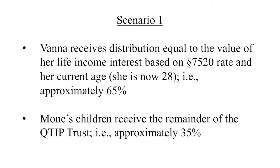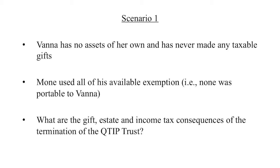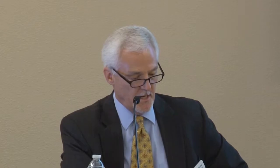The marital trust is split based on actuarial factors. In 2014, Vanna is 28 years old, so her share of the 45 million dollar marital trust would be approximately 65 percent — about 29 million dollars — and the Smith children would receive about 35 percent when the trust is severed. Vanna has no prior taxable gifts and has her full applicable exclusion amount. Money unfortunately used all of his exemption before death, and none of his estate tax exemption was portable to Vanna.